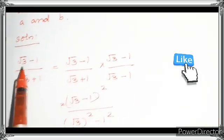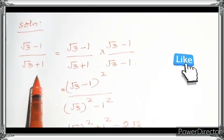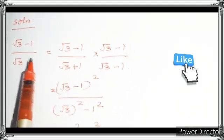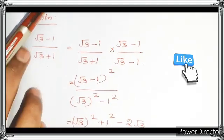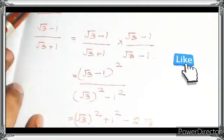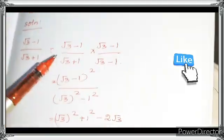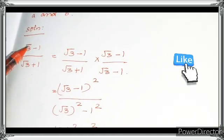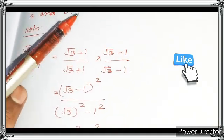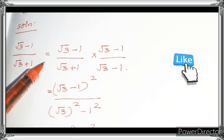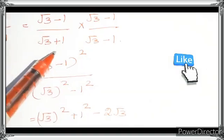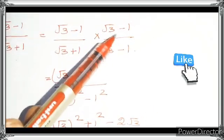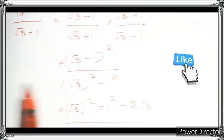So first you have to take root 3 minus 1 over root 3 plus 1. First you rationalize this denominator — then only you can find this. It is easy. That is, given that root 3 minus 1 divided by root 3 plus 1 equals A plus B root 3. So if we find this number in the format of A plus B root 3, we can find the answer very easily. For that, I am going to multiply the numerator and denominator by root 3 minus 1.